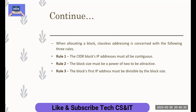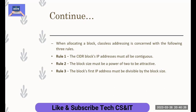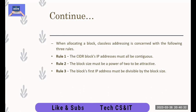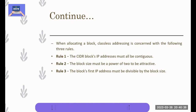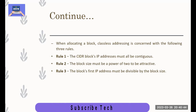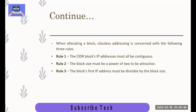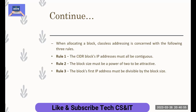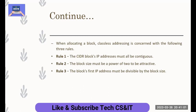We have three rules for classless IP addressing. If we have a classless block, there are three rules. The first rule is that the IP addresses assigned to the block must be contiguous. For example, if an organization has addresses 200.10.20.32, then we give 33, 34, and so on. It is not the rule to assign 33, then skip to 36.